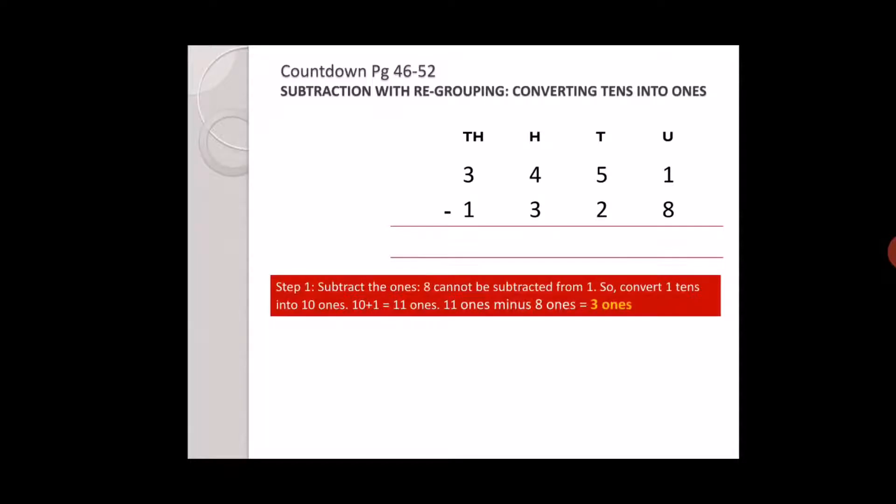In the ones place there is one and eight. One minus eight cannot be done, so what do we do? We borrow one from tens and give to ones. When we give to ones it becomes eleven.